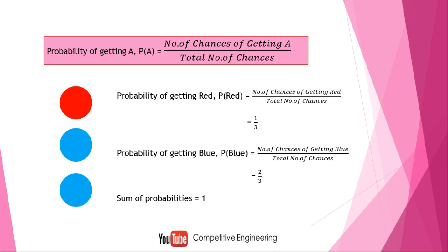We can conclude one key thing: the sum of all probabilities should be equal to one. There is one red ball and two blue balls, so I can take either a red ball or a blue ball. The probability of getting red is 1/3, the probability of getting blue is 2/3, so the total is 1/3 plus 2/3, which equals one.